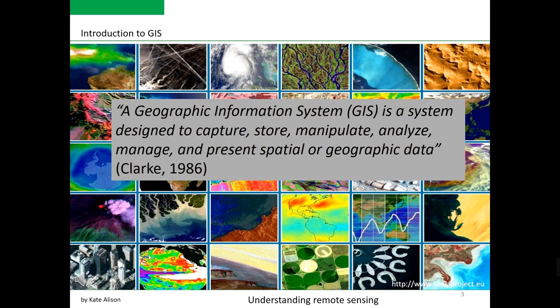What is the definition of GIS? A Geographic Information System, as can be seen from this slide, is a framework designed to capture, store, manipulate, analyze, manage, and present spatial or geographic data.